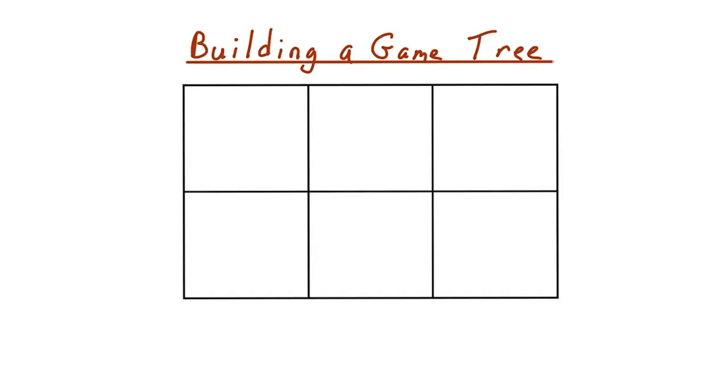Now let's use a simple 2 by 3 version of isolation to illustrate how to make a game tree that shows all the moves possible during a game. We will use this game tree to select moves which give the best guarantee of winning.